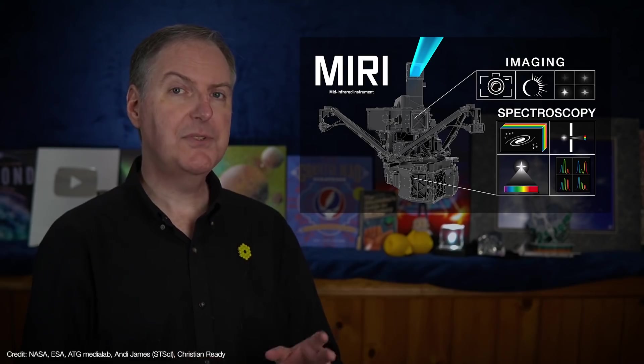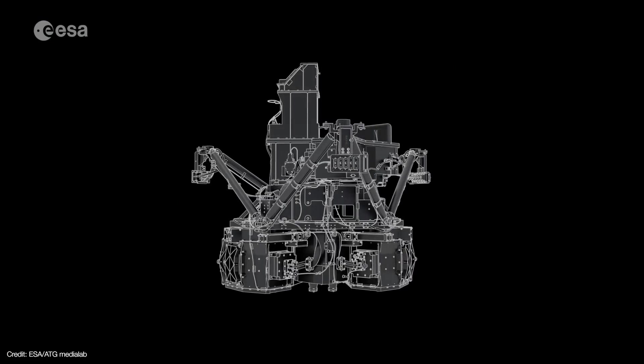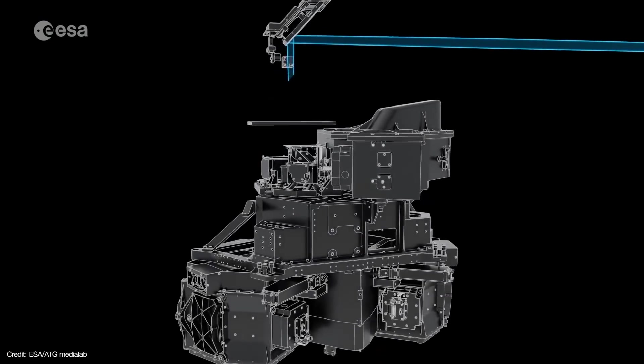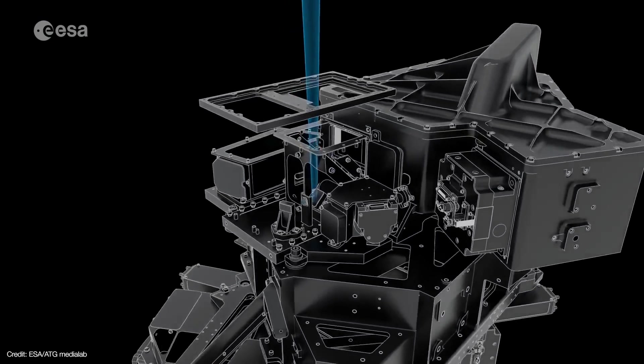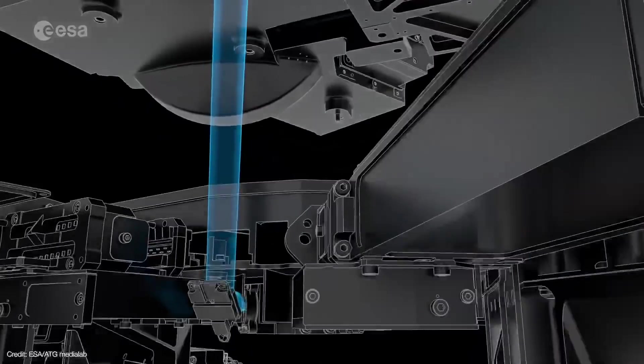The bottom half of the instrument houses MIRI's medium resolution spectrograph. Initially, light enters through the top half of the instrument where the imaging hardware is located. After passing through the initial formatting mirrors, the beam is sent to the bottom where the spectrograph is located.